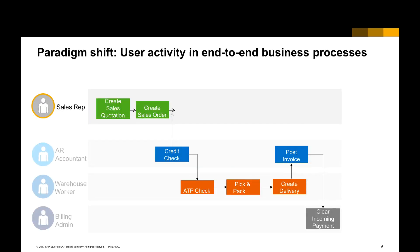The second paradigm shift is to put the user activity into the end-to-end business process. Looking at the order-to-cash process, it involves four roles. The sales representative creates the quotation and creates a sales order based on the quotation. The accountant does the customer credit limit checking and creates an invoice, after the warehouse worker performs the delivery. Each role needs specific information to accomplish their daily tasks.